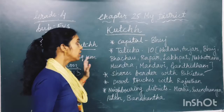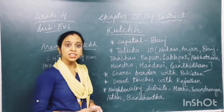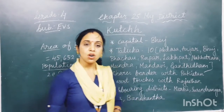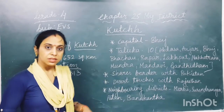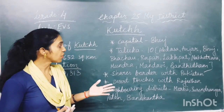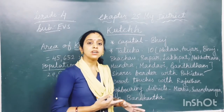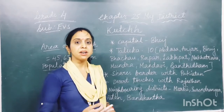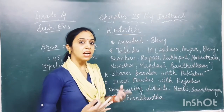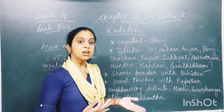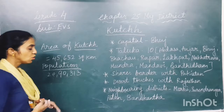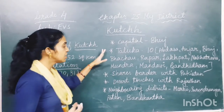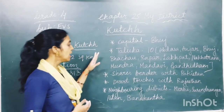There are 10 Talukas in Kutch. Which Talukas are there? Abdasha, Anjar, Bhajau, Bhuj, Rappar, Lakpat, Lakatrana, Madi, Mundra, and Gandam. These are the 10 Talukas of Kutch.